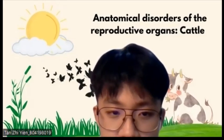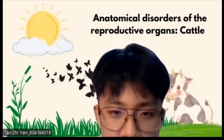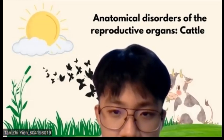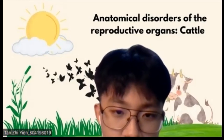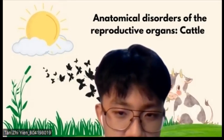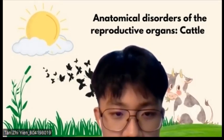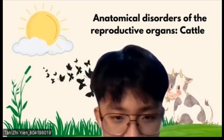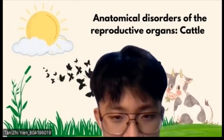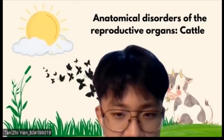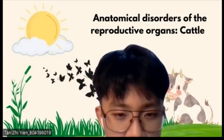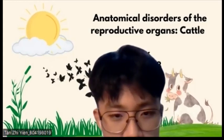A freemartin is genetically female but has many characteristics of a male. The ovaries do not develop correctly and remain very small, and they do not produce the hormones necessary to induce behavioral signs of heat. The external vulva region can range from a very normal-looking female to one that appears male, and in some animals an enlarged clitoris and large tufts of vulvar hair exist.